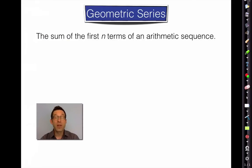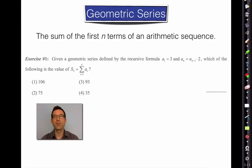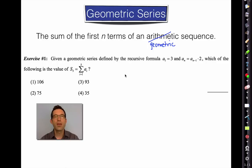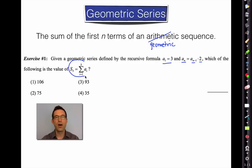Plain and simple — the geometric series is the sum of the first n terms. Note: the slide incorrectly says 'arithmetic series' but that's supposed to be the sum of the first n terms of a geometric sequence. Given a geometric series defined by the recursive formula a₁ = 3 and aₙ = aₙ₋₁ × 2, which of the following is the value of this sum?